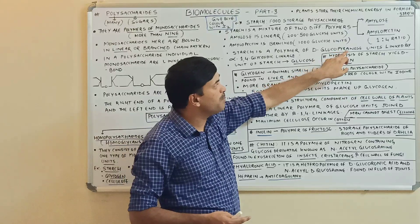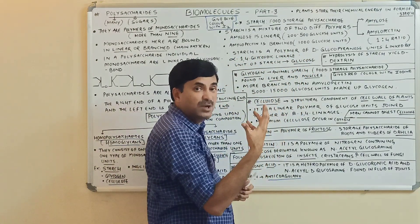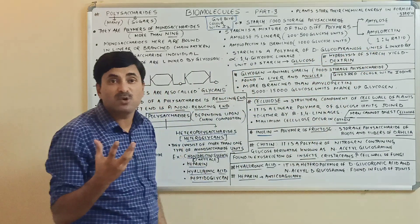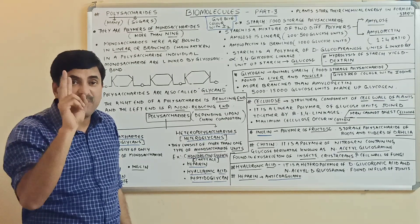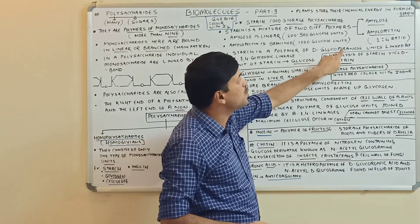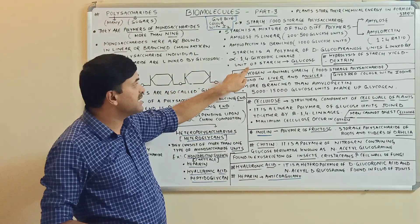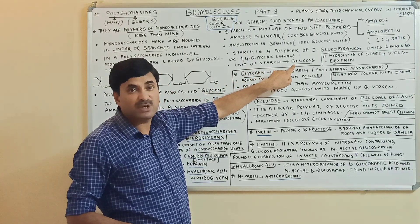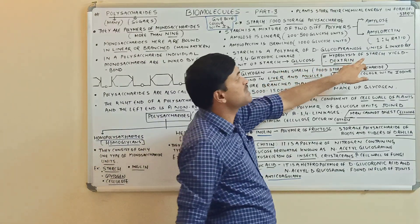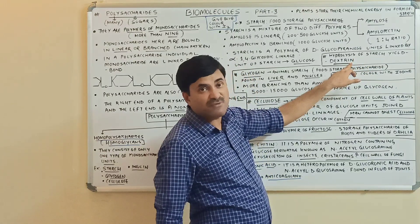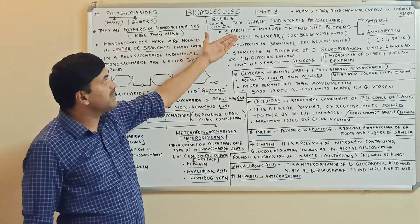Starch is a polymer of D-glucopyranose units linked by alpha-1,4 glycosidic linkage. A pyranose consists of 5 carbons and 1 oxygen. When starch is hydrolyzed — broken down — dextrin is produced. So the stored food material found in the plant is starch.